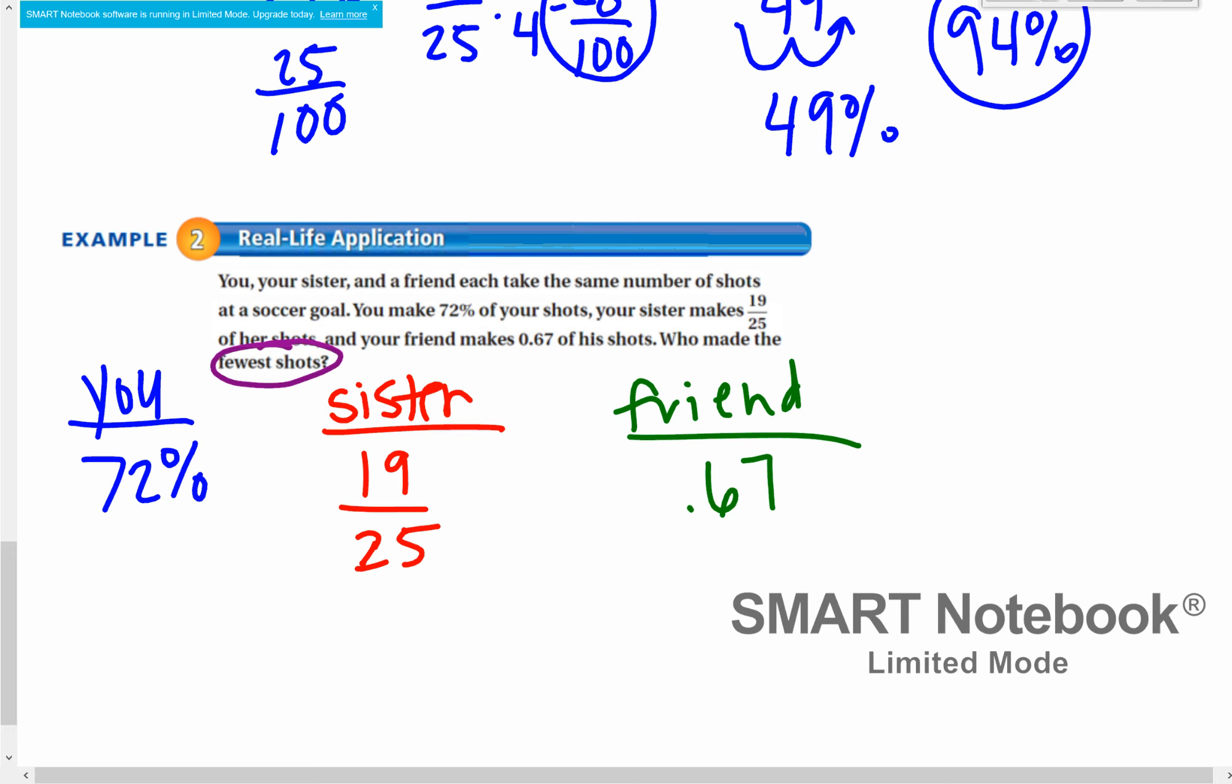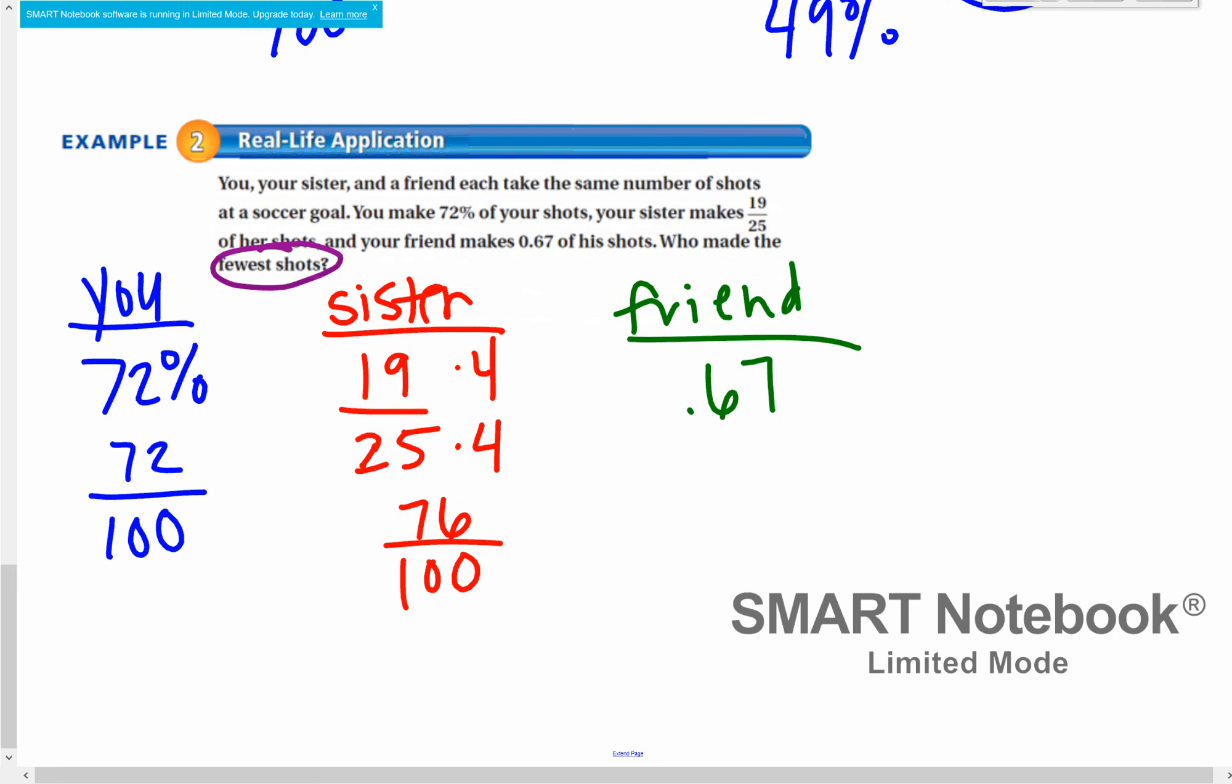I think finding the equivalent fractions is the easiest way to go about this. So I can make 72% into a fraction, 72 out of 100, since percent is out of 100. For my sister, I can make 25 a denominator of 100 by multiplying by 4. So I'm going to take 19 times 4 and 25 times 4 to get 76 over 100. And then last but not least, I'm going to take my friend, which is 67 hundredths, make that into a fraction, 67 hundredths, or I can make it into a percent by moving it 2 to the right, and then make it 67 over 100. And we are going to see who made the fewest number of shots. That would be your friend.